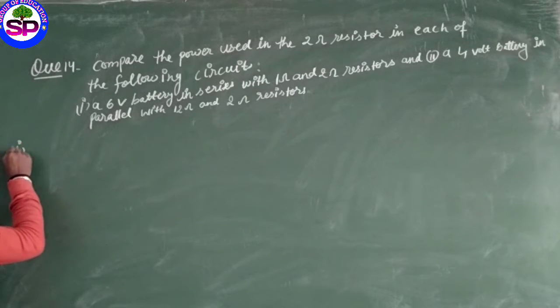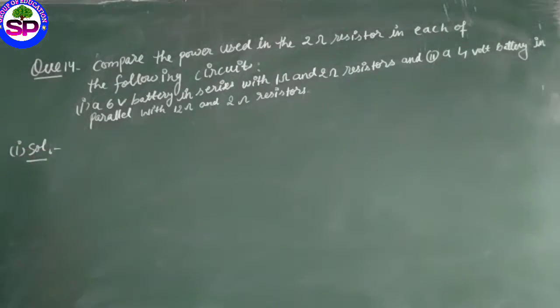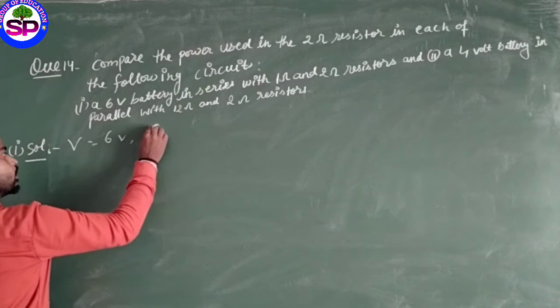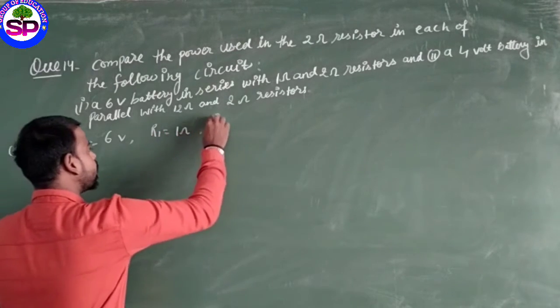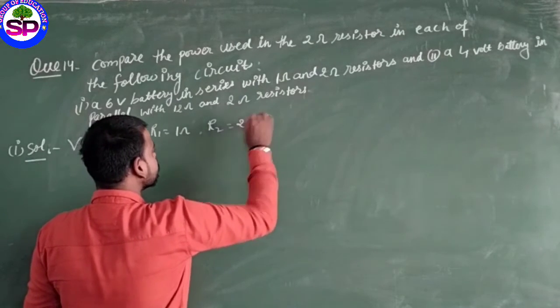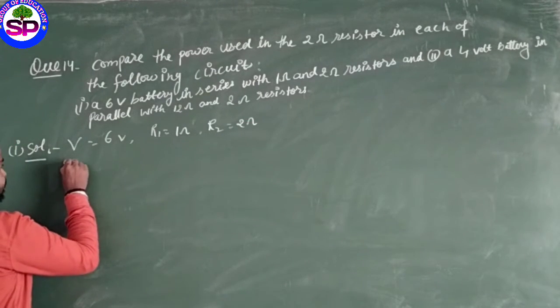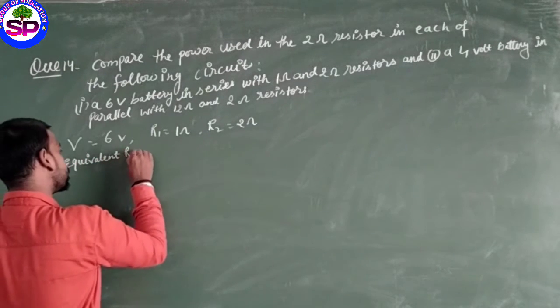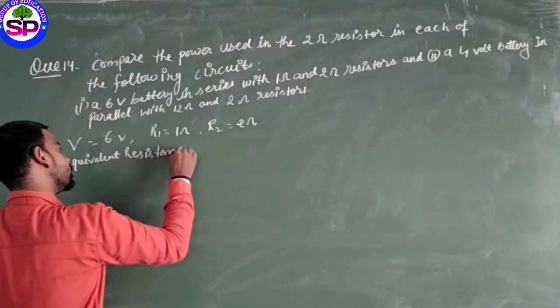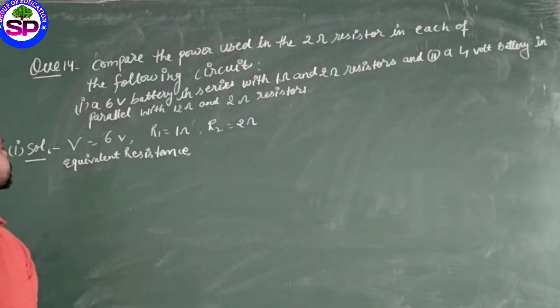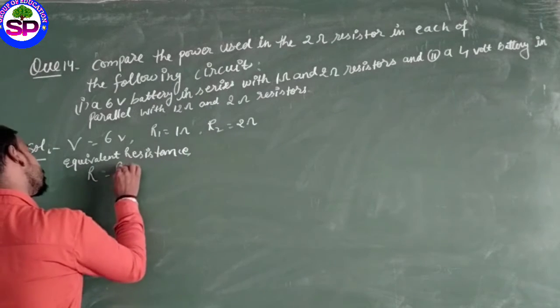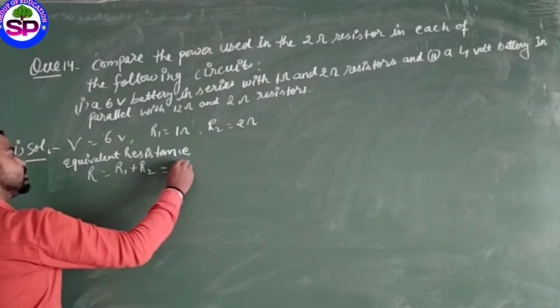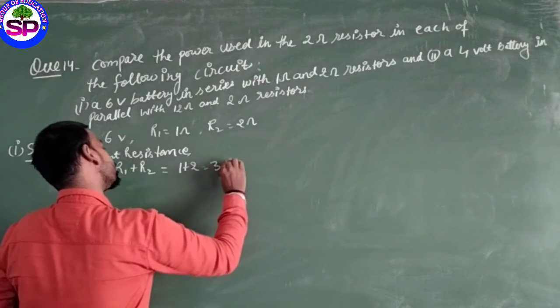Potential difference V equals 6 volt. R1 is 1 ohm and R2 is 2 ohm. The equivalent resistance in series is R equals R1 plus R2, so 1 plus 2 equals 3 ohm.